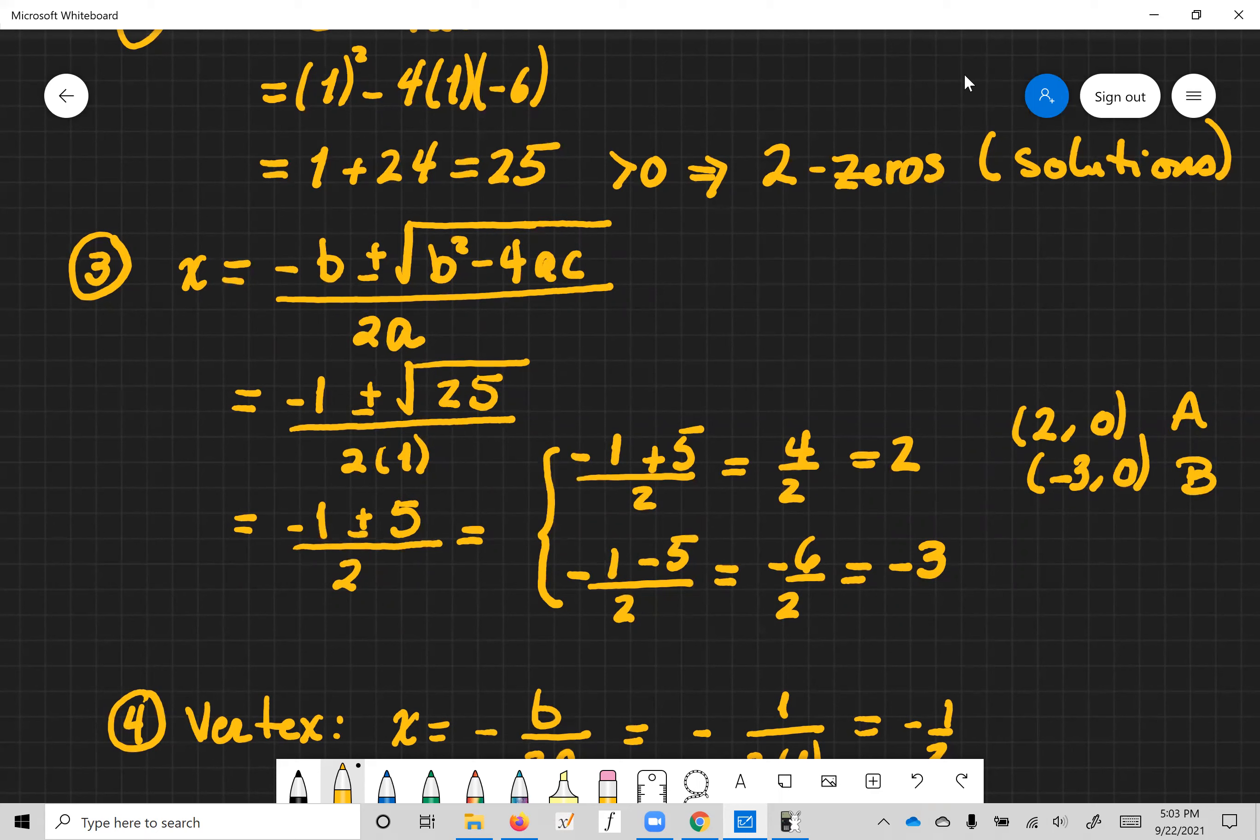We have two possibilities for x. One with the plus five and one with the minus five. The plus five gives us a two, the minus five gives us a negative three. So these are the two intercepts or the two zeros and we label them a and b.